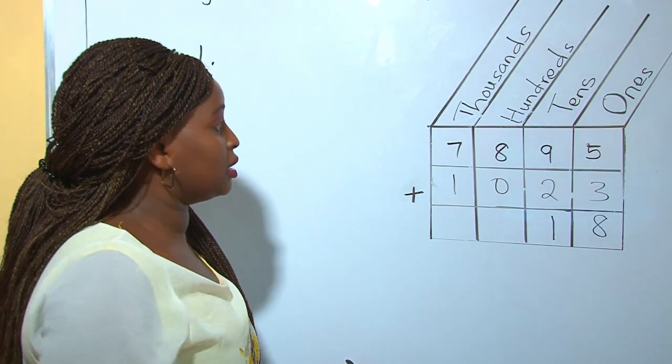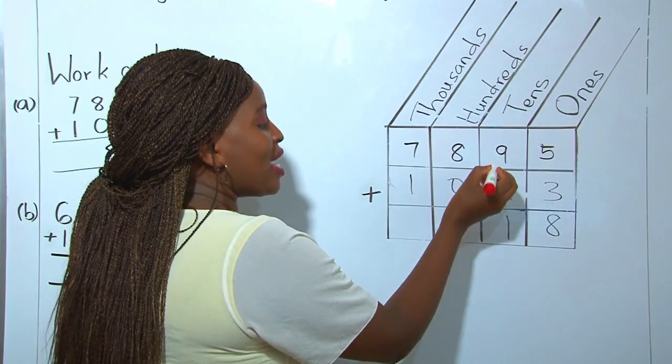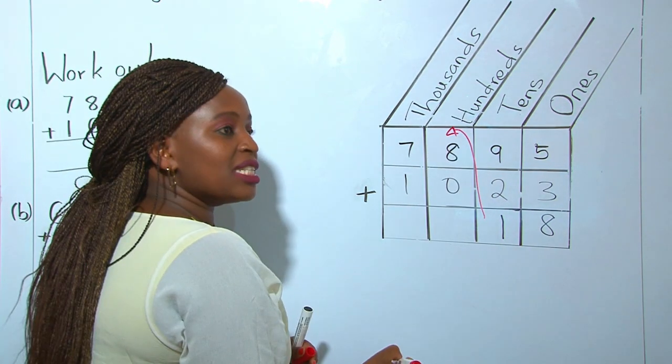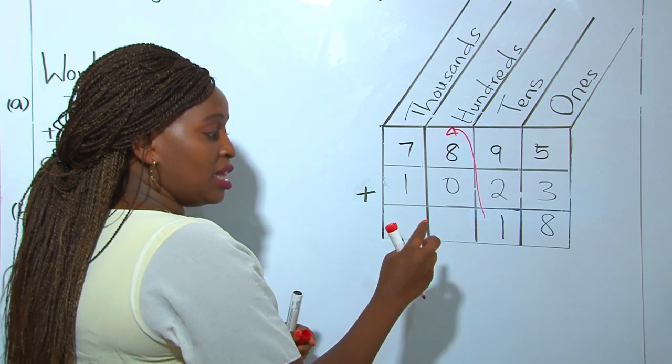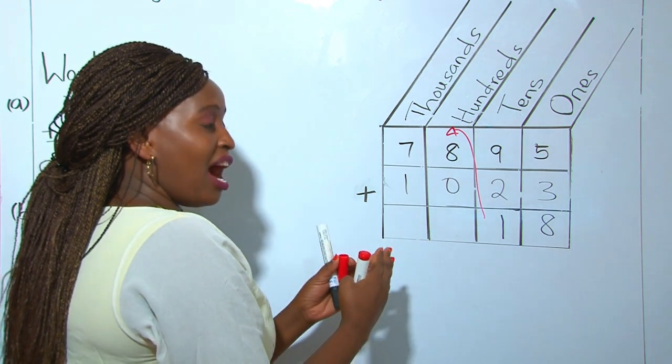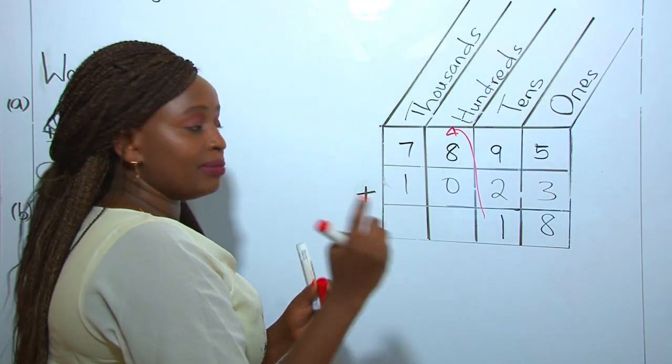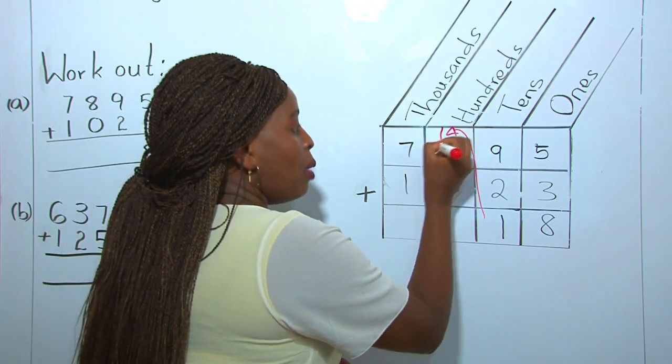So how do we do that? We regroup one ten and take it to the hundreds place. Because we said there were 11 tens. How many tens make 100? 10. So we add our hundred there.